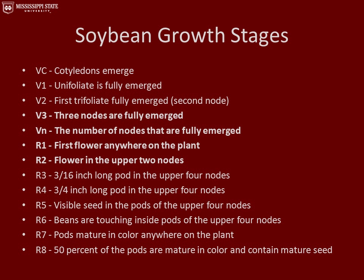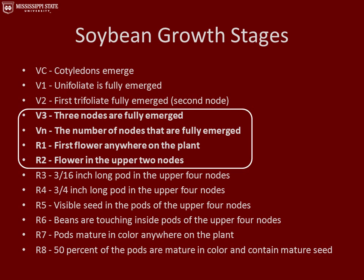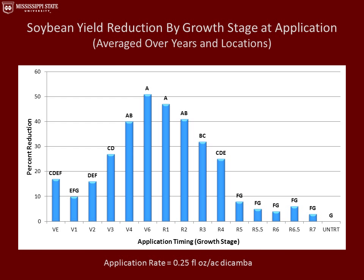This slide shows the scale used to determine soybean growth stages in the field, with particular attention to the late vegetative and early reproductive growth stages. The graph of soybean yield reduction by growth stage at application shows the greatest yield reduction at the V4, V6, R1, and R2 growth stages, ranging from about 40% to 51% yield reduction. After the plant was in the R5 growth stage, we saw no significant yield reduction in the field.